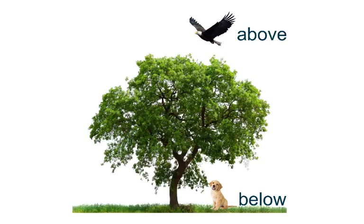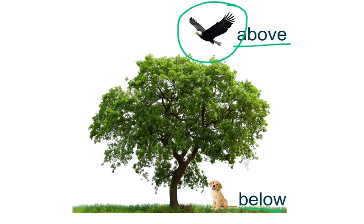Today we are going to focus on two position words, and that is above and below. So what is above and what is below? Let's take a look at the tree. Where is the eagle in position to the tree? We know that the eagle is above the tree. And where is the dog in regards to the tree? Is the dog above the tree? No, the dog is below the tree.